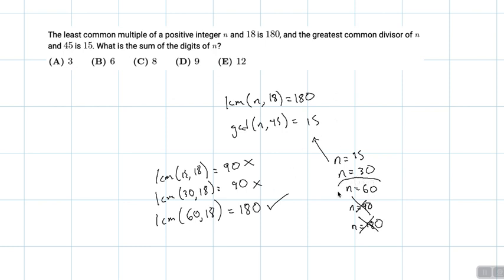Therefore n is equal to 60. This is asking what's the sum of the digits of n? It's going to be 6 plus 0, which is 6. So the answer is choice B.